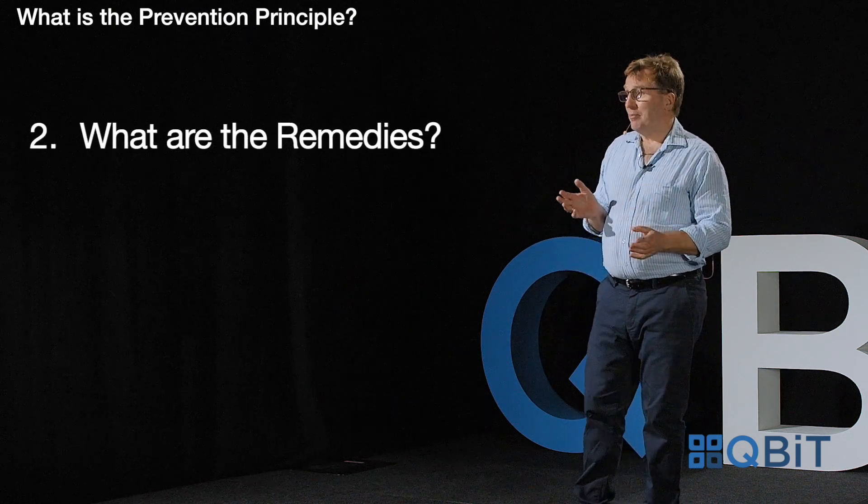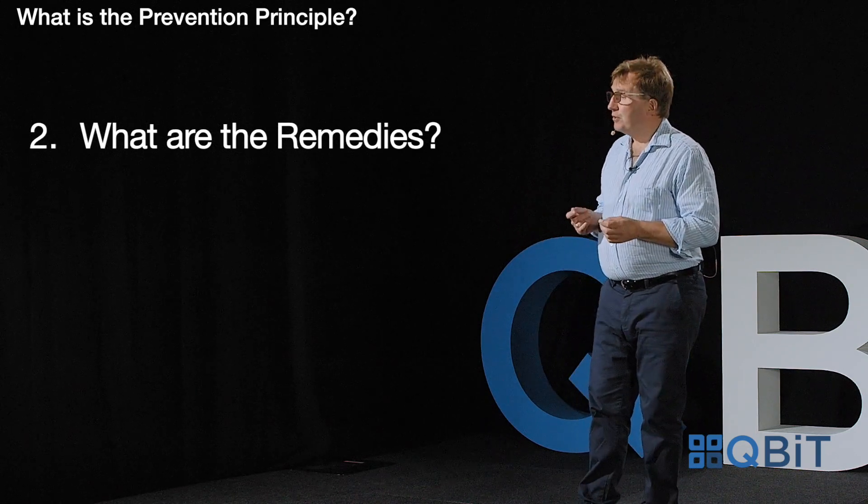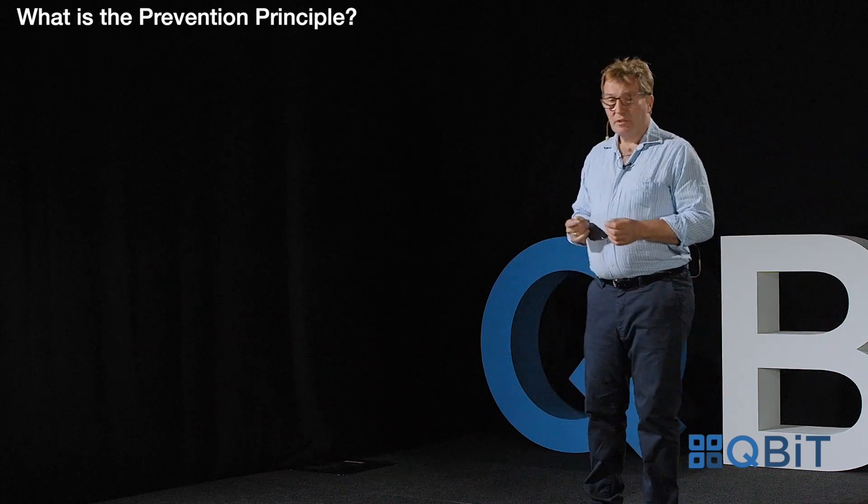What are the remedies you might be looking for? First, the defensive remedies. Very often the prevention principle is being used to prevent the other party relying on an act of default to terminate the contract — in other words, to suspend or prevent the operation of a right of termination. Alternatively, you may be looking to suspend the running of time or postpone a deadline, and with it any obligations, for example, to pay liquidated damages.